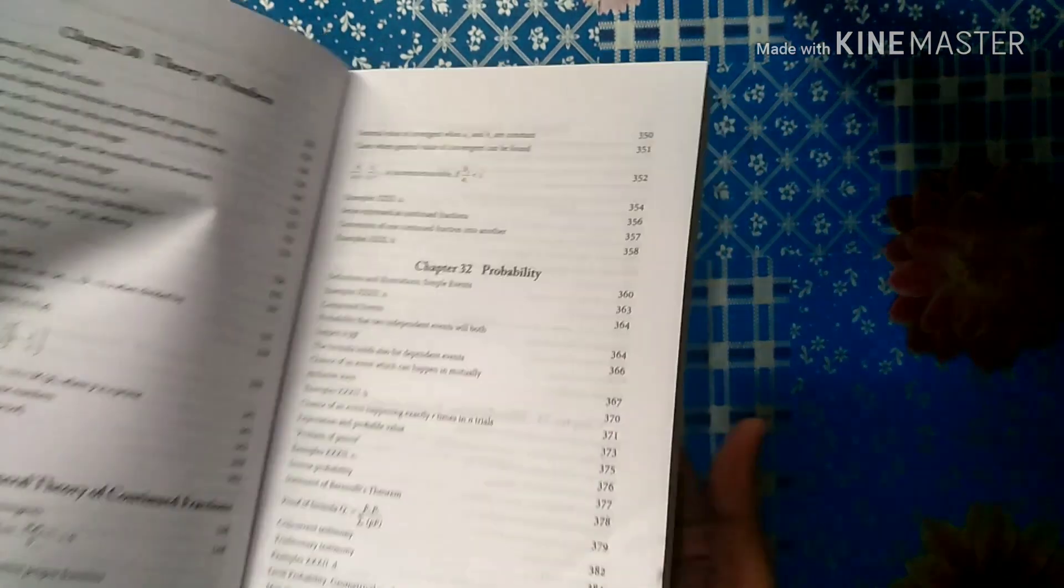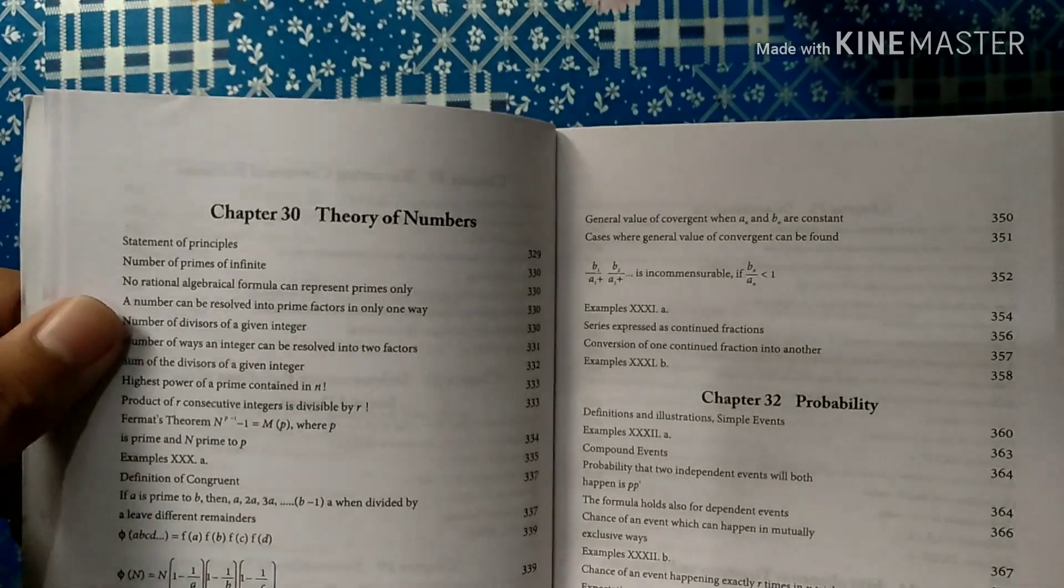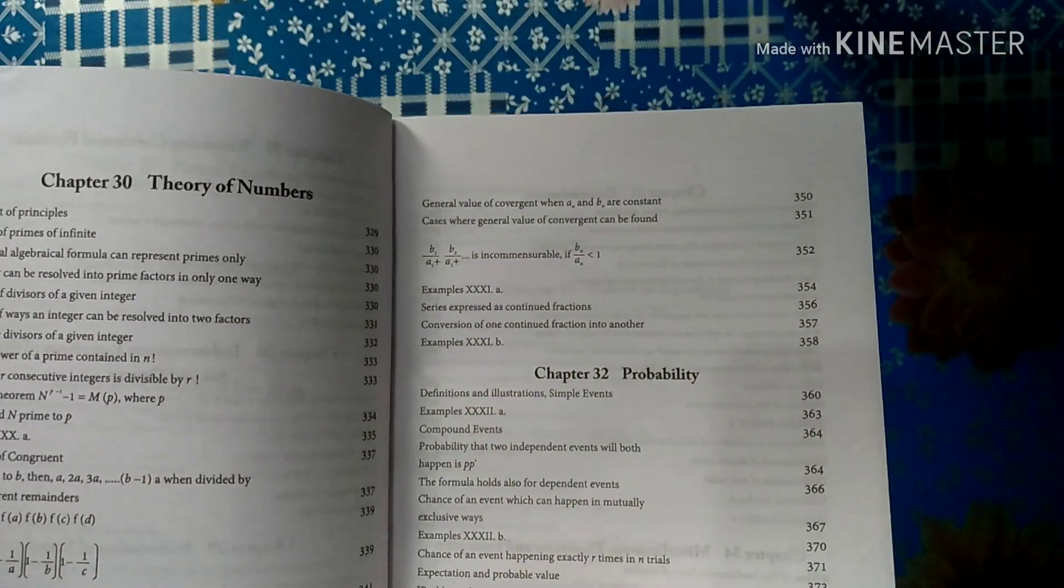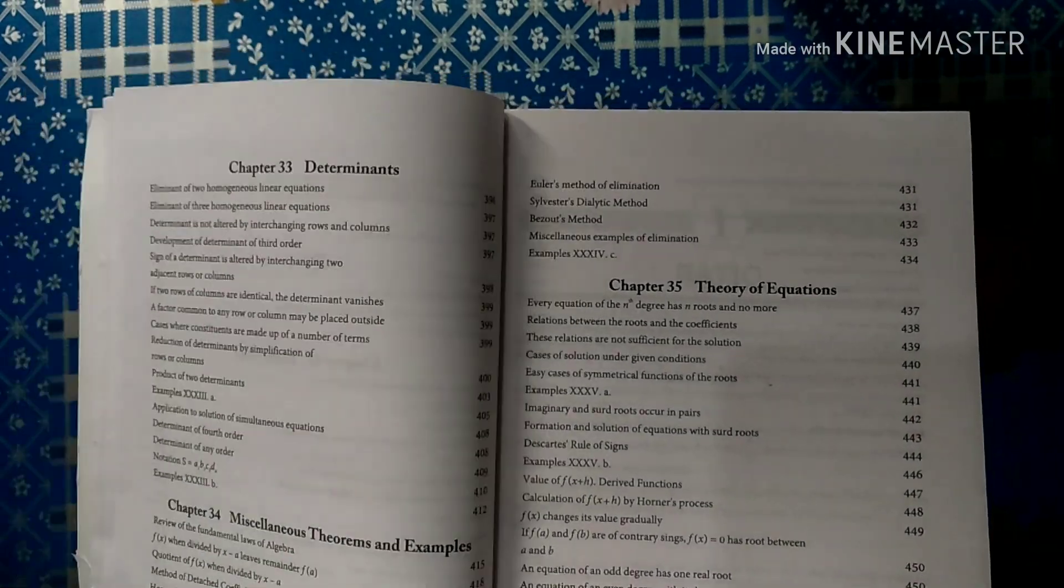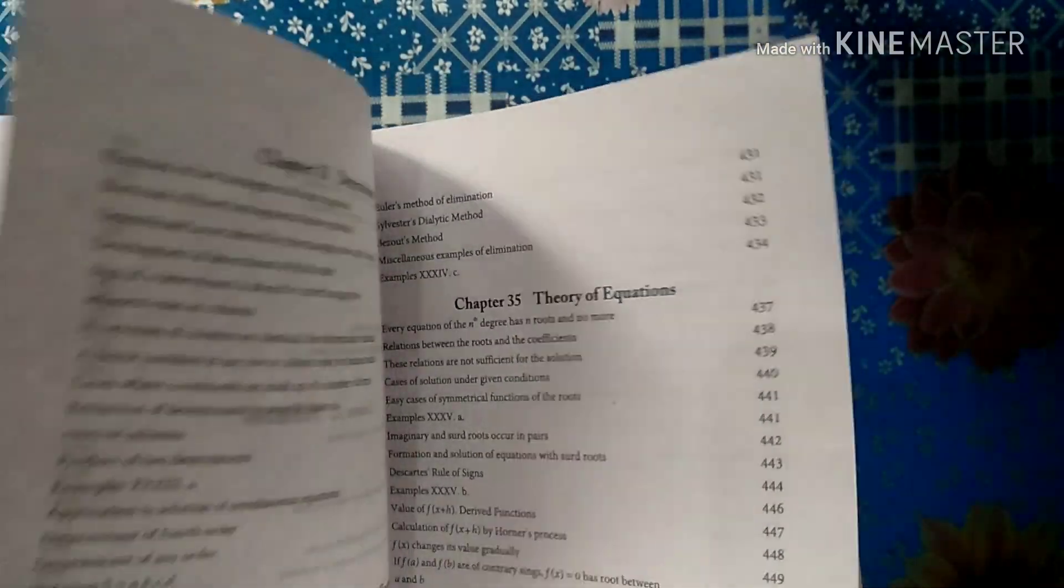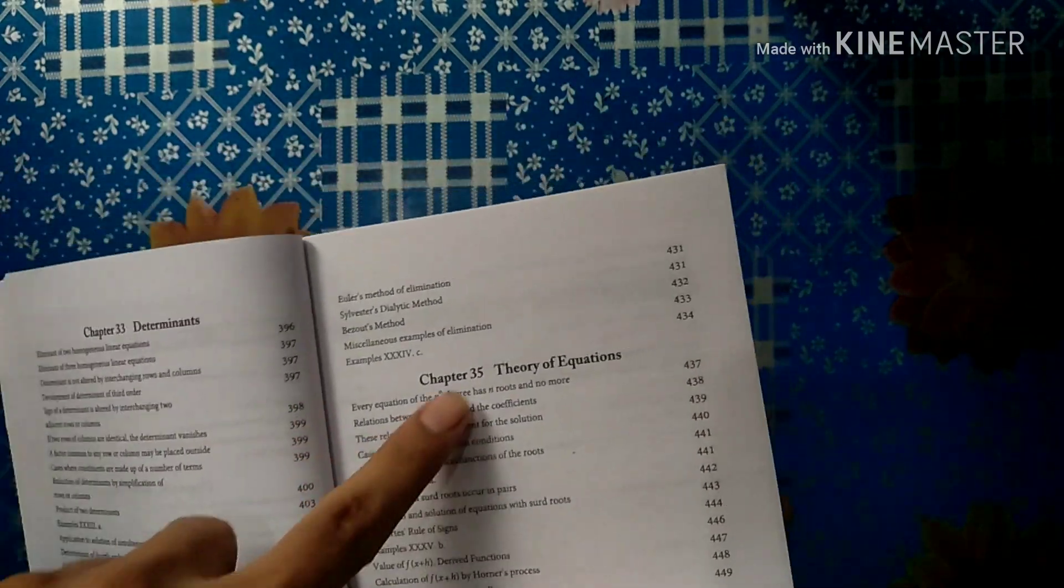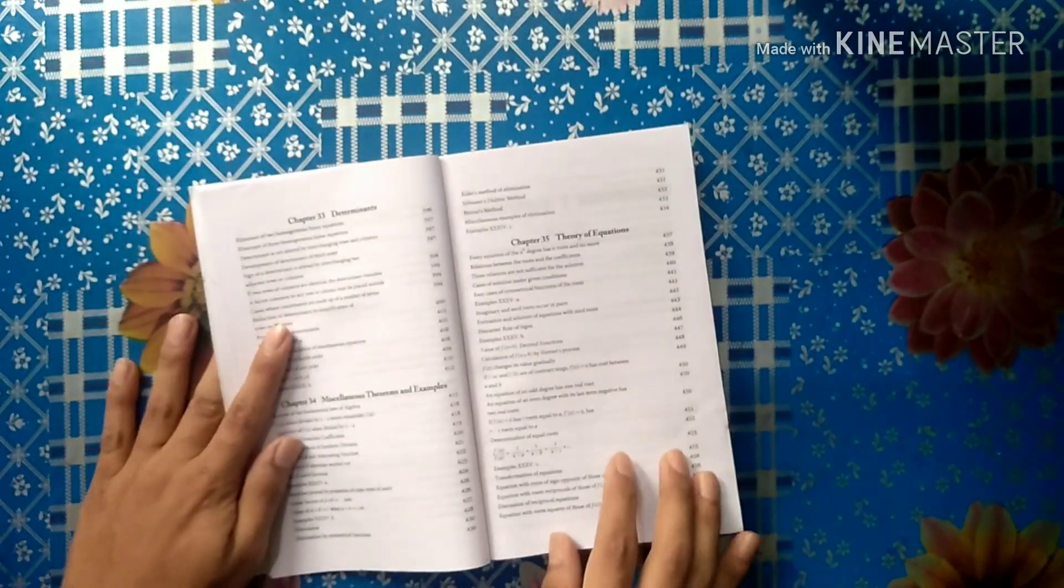Then comes our next chapter, Theory of Numbers, General Theory of Continued Fractions, Probability, Determinants, Miscellaneous Examples, Theory of Equations. So there are a total of 35 chapters. That's a lot.